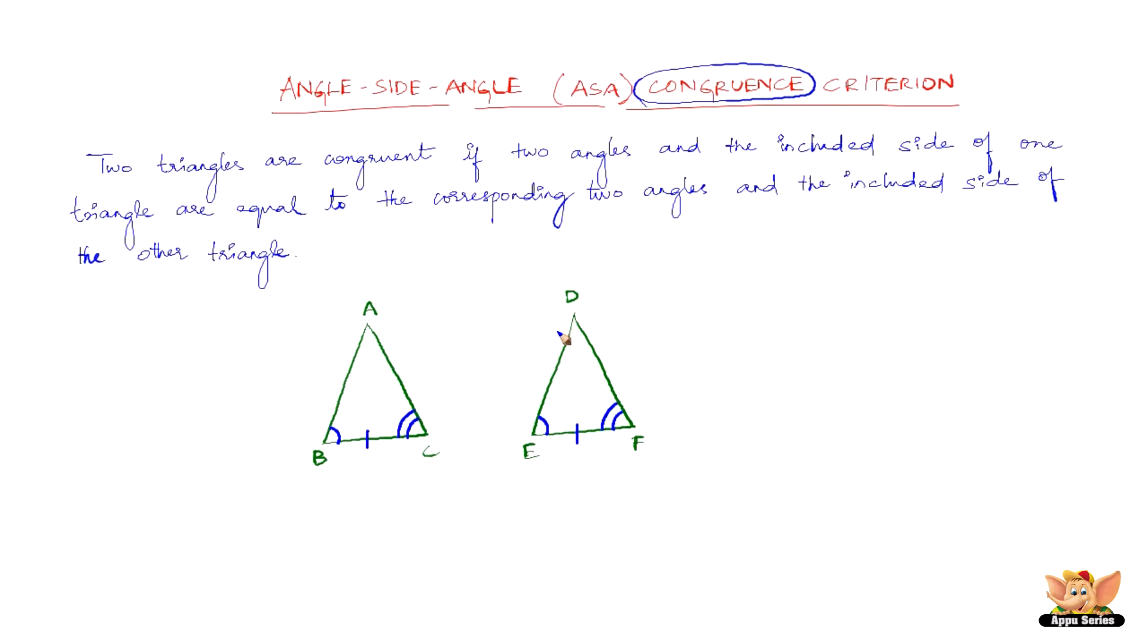Now how do we go about proving this or validating this? All we have to do is place the triangles one on top of each other, superimpose one triangle on another triangle. Say for example we place triangle ABC on DEF such that angle B exactly coincides with angle E.